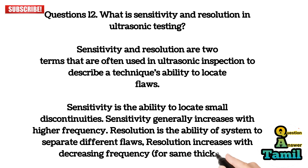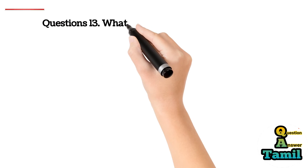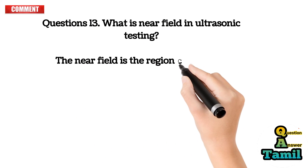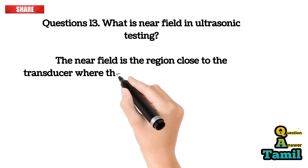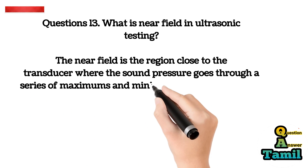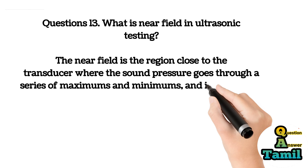Question 13: What is near field in ultrasonic testing? The near field is the region close to the transducer where the sound pressure goes through a series of maximums and minimums, and it ends at the last on-axis maximum at distance N from the face. Near field distance N represents the natural focus of the transducer. The near zone is the zone where the sound wave pressure at each point is not uniform.